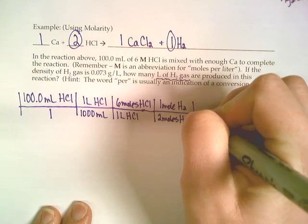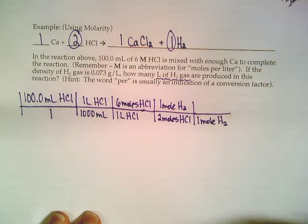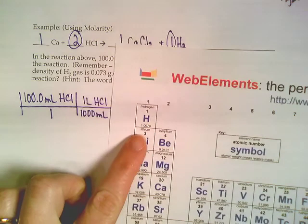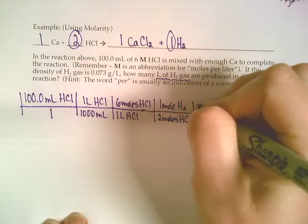So we're going to go moles to grams, then grams to liters. Moles of hydrogen into grams of hydrogen—we need the molar mass of H₂. Since each hydrogen has a molar mass of 1 gram, when we put two of those guys together it would weigh 2 grams.